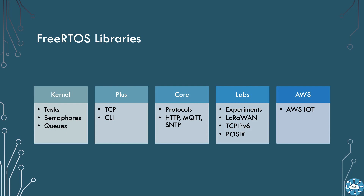FreeRTOS is supported significantly by AWS, and AWS IoT is also a framework. This uses the MQTT protocol from core and adds high-level services such as jobs and device shadows.